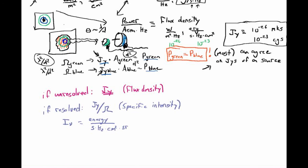If you have an unresolved source like a point source, then because everybody agreed on the number of Janskys but we start dividing by different beam areas, not everybody will agree on the specific intensity. You can only agree on the specific intensity if you have filled your whole beam on the sky with that source — your beam has to be smaller than your source.